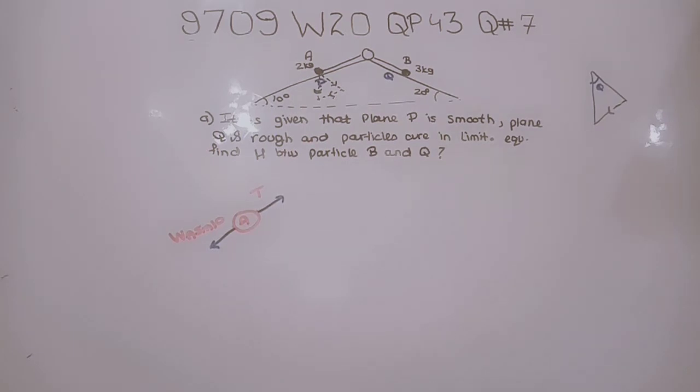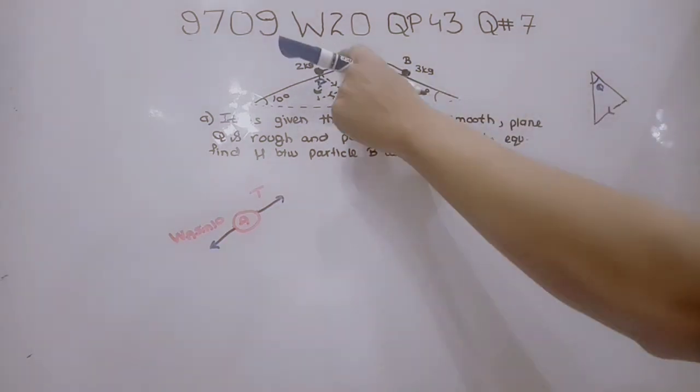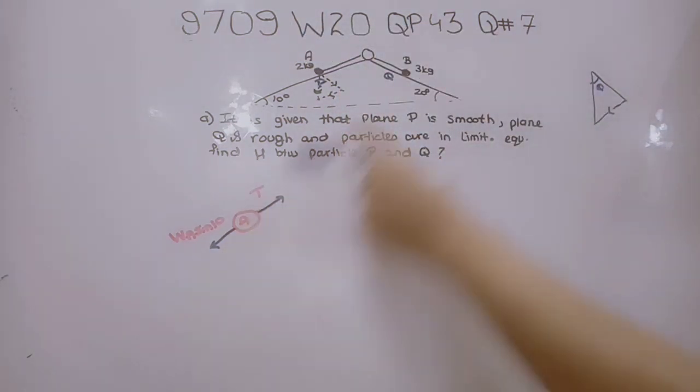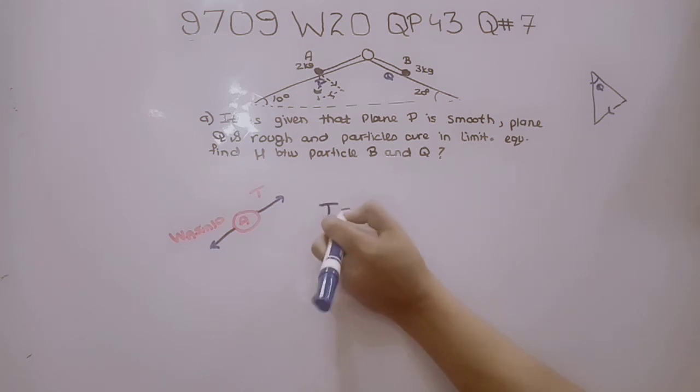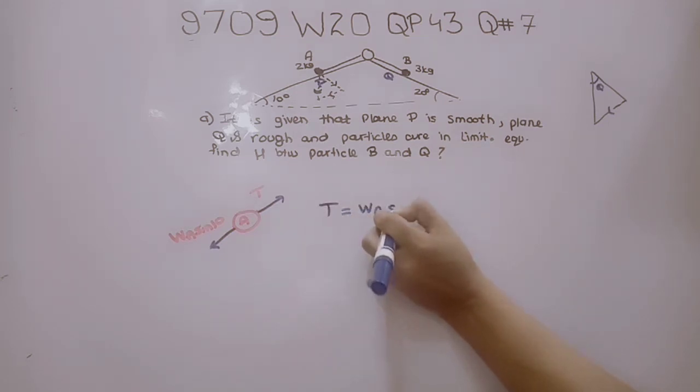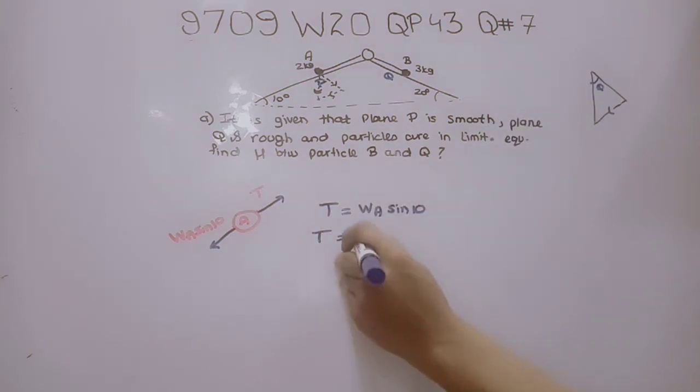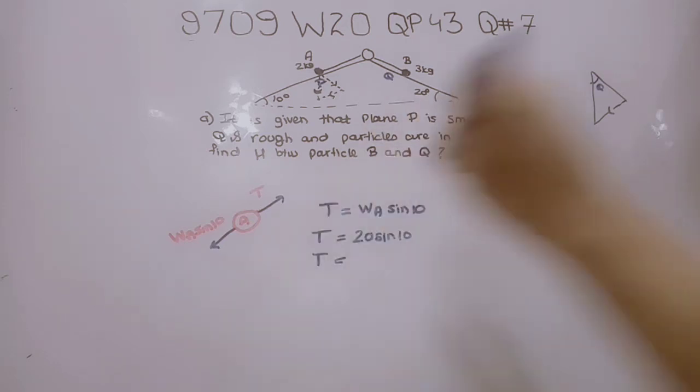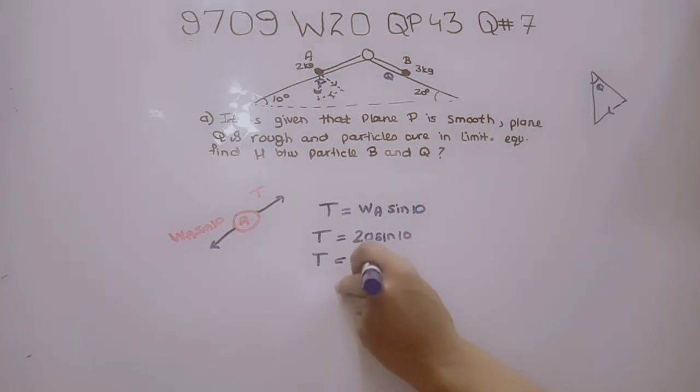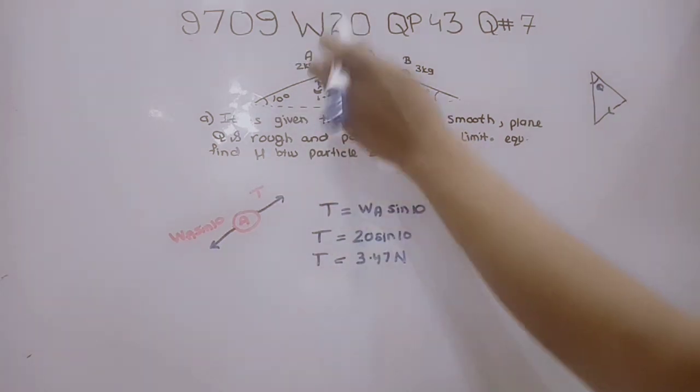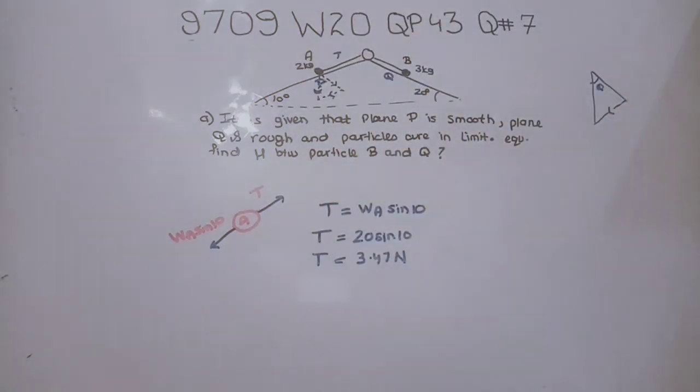As can be seen, surface A is smooth and it is in limiting equilibrium. If it is in limiting equilibrium, then this tension T and this weight component will be the same. So we can write that T equals WA sine 10. T equals 2 times 10 sine 10, which gives T equals 3.47 newtons. We have found the value of T which will be the same for the whole system.